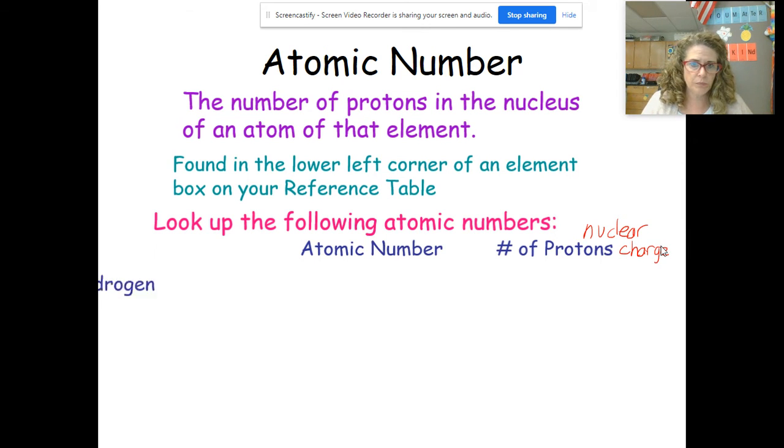The atomic number for hydrogen is 1, so that means the number of protons is 1. That means the nuclear charge is also positive 1. Remember, the nucleus is positive from our Rutherford's gold foil experiment.